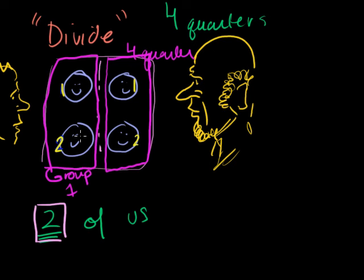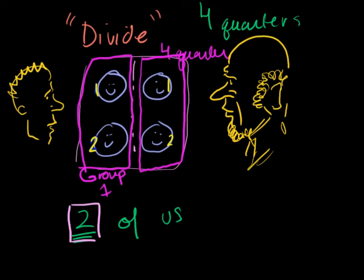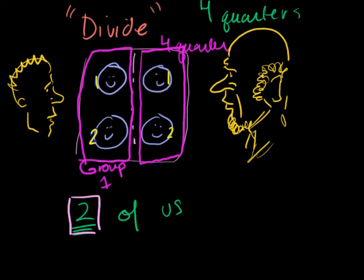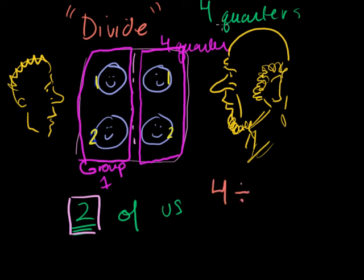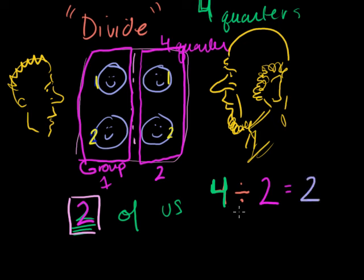This is something you've been doing probably as long as you've been splitting money between siblings and buddies. How do we write this mathematically? We can write that four divided by two — this four divided by the two groups — is equal to two. When you divide four into two groups, each group is going to have two quarters in it, so it's equal to two.